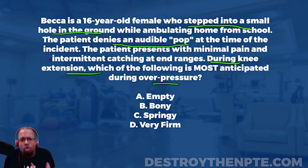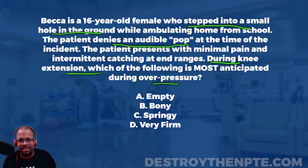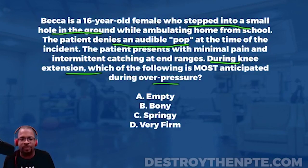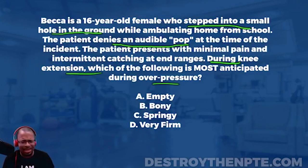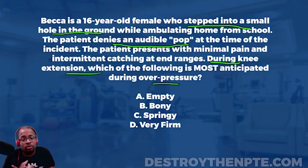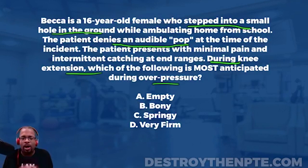Now, I'm telling you this patient has a meniscal tear, and the question asks: during extension, which end feel is anticipated during overpressure? The answer choices are: A — empty, B — bony, C — springy, D — very firm. Lock in your answer. Let's go through option A first. An empty end feel is an abnormal end feel — we typically see it when the patient has significant pain, where they won't allow us to continue the range of motion.